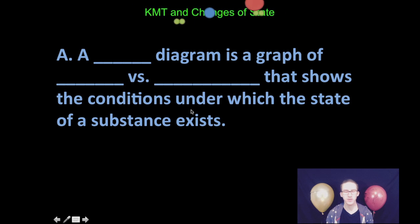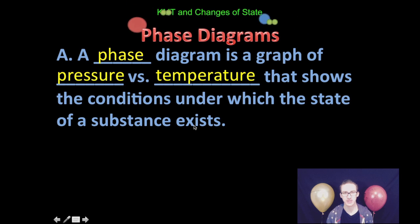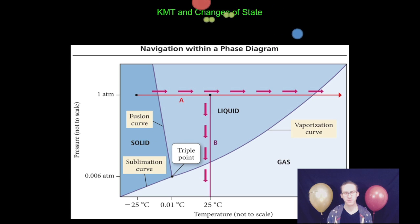All right, another really important graph to think about as we think about kinetic molecular theory and changes of state are things called phase diagrams where we graph pressure versus temperature. And it sort of shows us the conditions under which the state of a substance exists. Again, the great thing about phase diagrams is it helps us to better understand what sort of pressure conditions and what sort of temperature conditions we would need in order to see any of the phases of that substance.